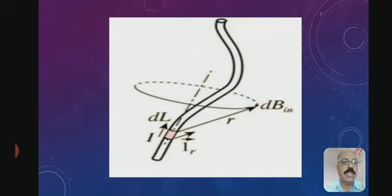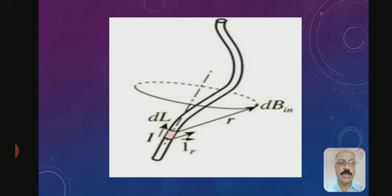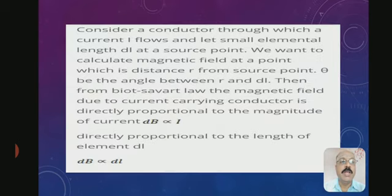This figure illustrates Biot-Savart law. In this figure, a long wire is considered as a conductor made up of small elements DL. A current I flows in that conductor, and around that conductor a magnetic field dB is produced. Consider a conductor through which a current I flows, and take a small element of length DL at a source point.